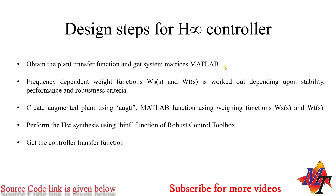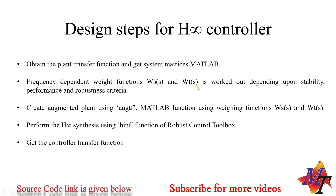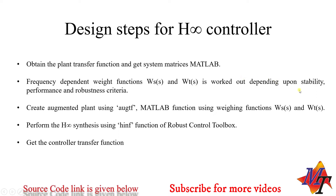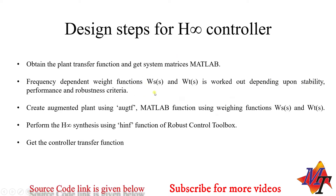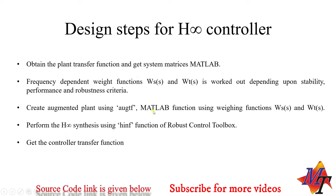We need to have the plant's transfer function and model it into state space. The second step is to choose the weight functions — that is, the sensitivity and complementary sensitivity weight functions — because the plant's stability is dependent on them. Depending upon the stability, performance, and robustness criteria, these weights have to be chosen very wisely. Next, we have to incorporate both weight functions and the transfer function into a plant called the augmented plant.